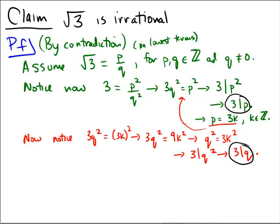But what this argument essentially shows is that 3 will always go into both the numerator and the denominator, so you can't ever reduce this fraction into lowest terms. And that's a contradiction. This contradicts that p over q was in lowest terms.